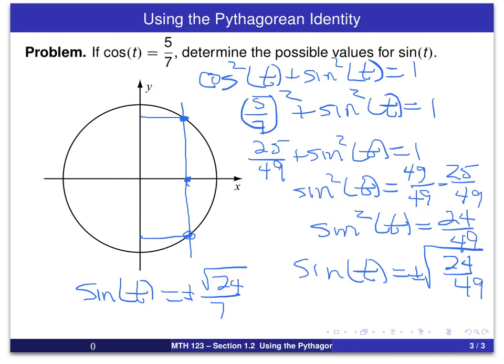So, what we have are our two possible values for sine of t, which we can see on the graph at these two points here.